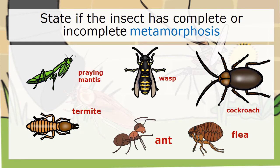Now let's look back at our lesson and recall what we've learned. On the screen there are six insects. You are going to pause the video and identify which ones have complete metamorphosis and those that have incomplete metamorphosis. Okay, are you ready? Great.